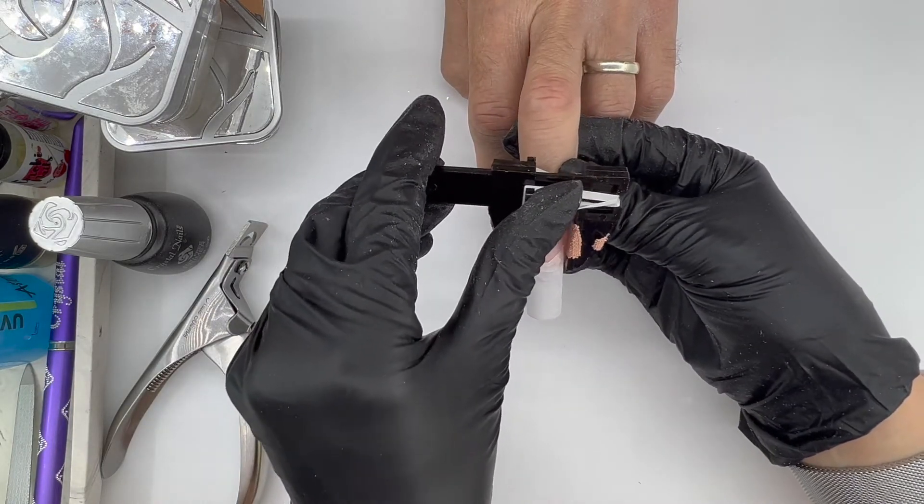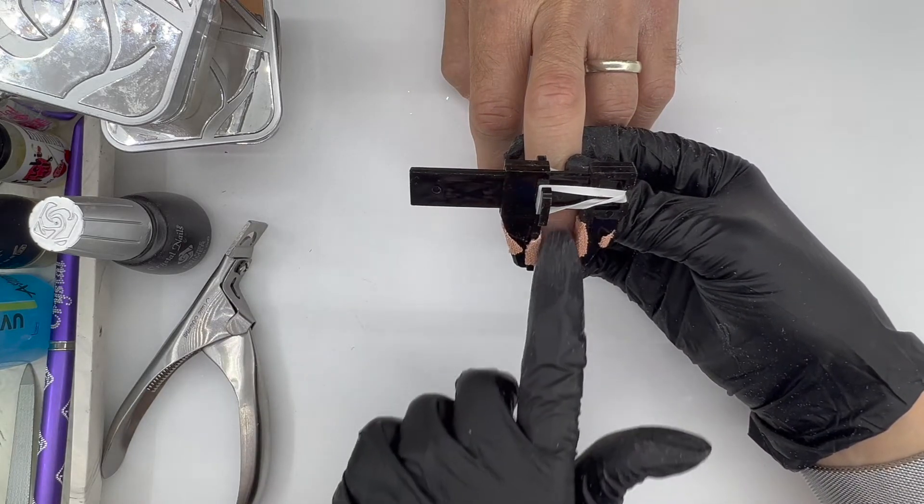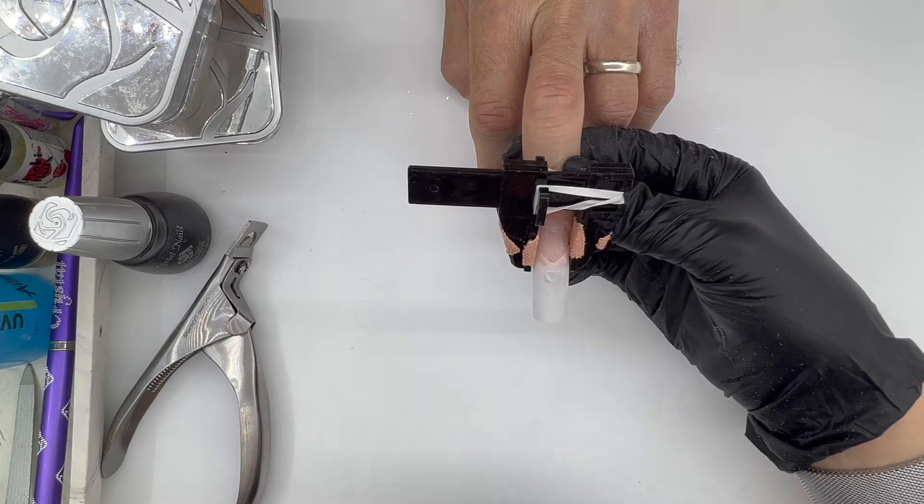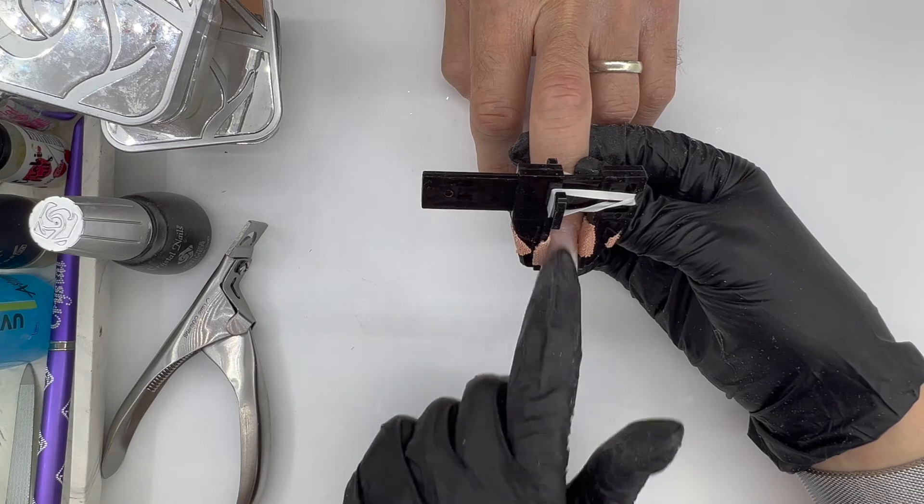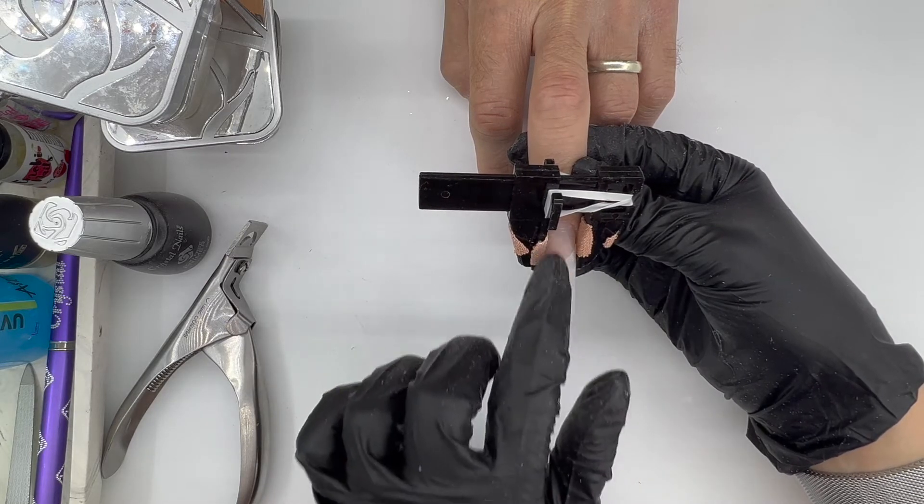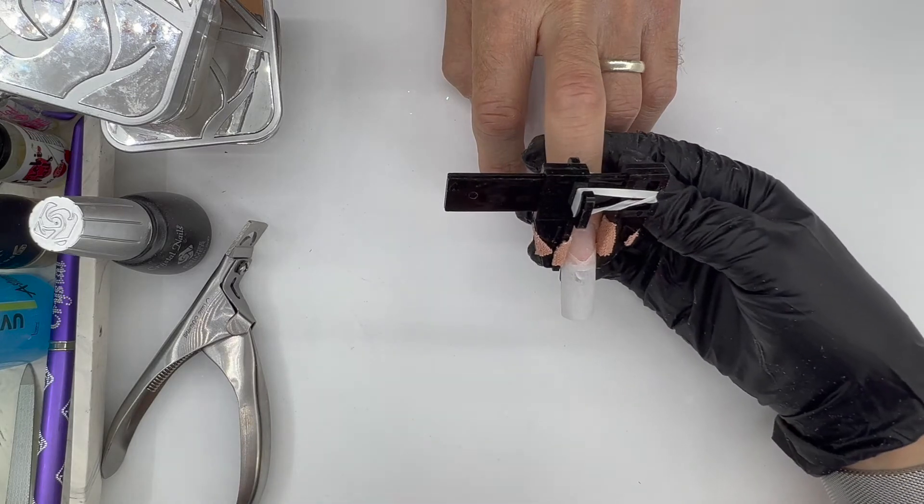Now depending on what techniques you've done, once that tip is glued, you may find you want to or you may find you need to blend at that contact point. So this is a wellness tip, so it didn't need to be fit at a certain place—it could be fit further down the nail if needed.